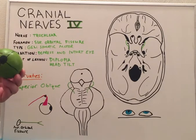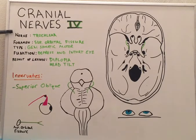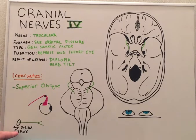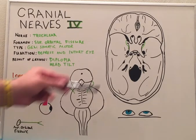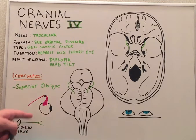The muscle contraction rotates the eye inwardly. The trochlear nerve has a straightforward course — it comes out of the superior orbital fissure from the cranium and directly attaches to and innervates the superior oblique muscle.